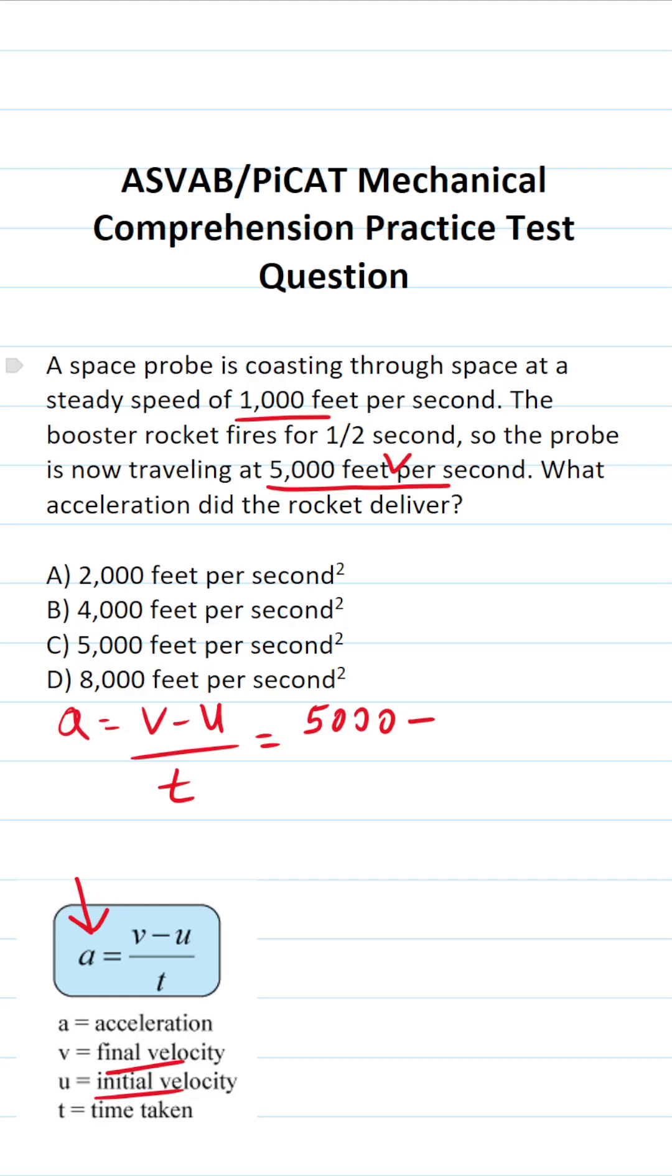Our initial velocity was 1,000 feet per second. And how long did that booster rocket fire? It fired for half of a second.